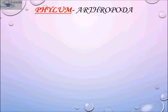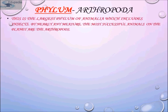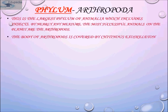Arthropods possess a chitinous exoskeleton that must be shed during growth. This is the largest phylum of Kingdom Animalia, which includes insects. By nearly any measure, the most successful animals on the planet are the arthropods. The segmented bodies are arranged into regions called tagmata — for example, head, thorax, and abdomen. They have bilateral symmetry, and the body is covered by a chitinous exoskeleton.